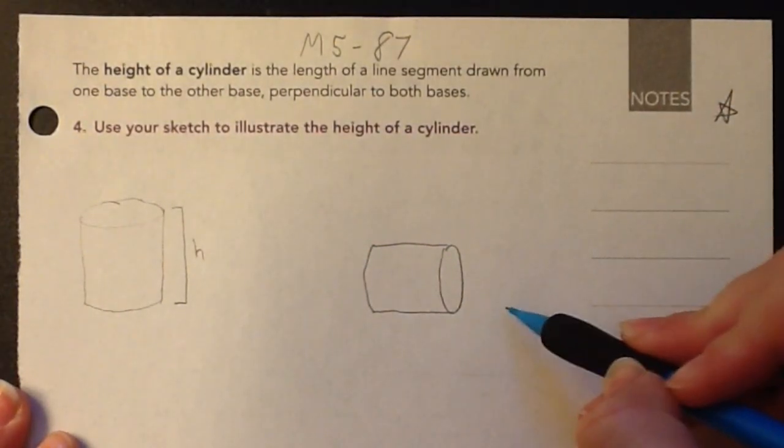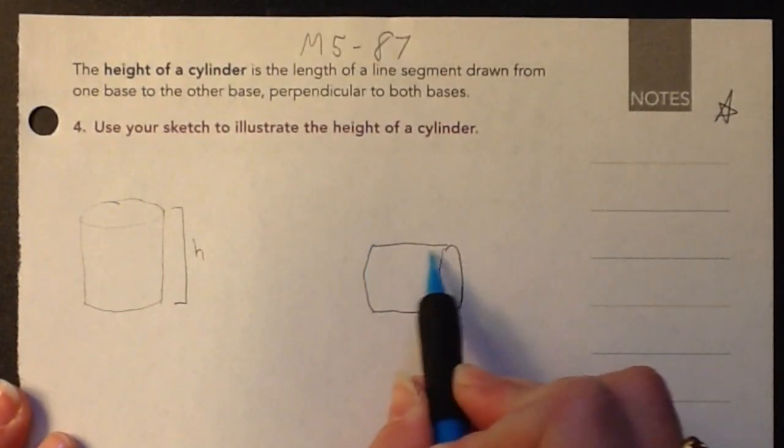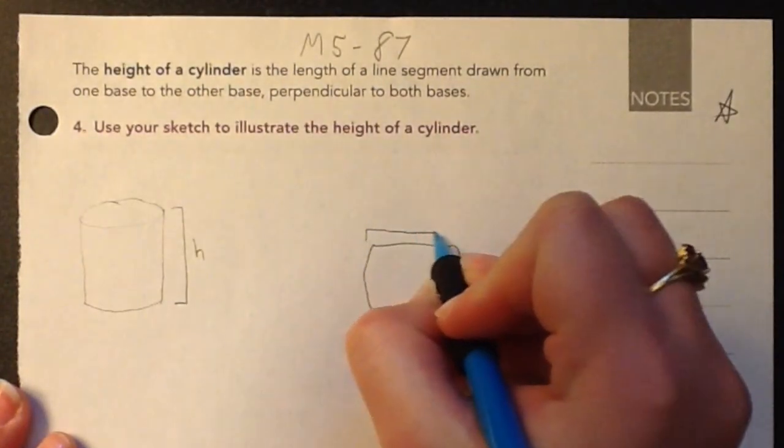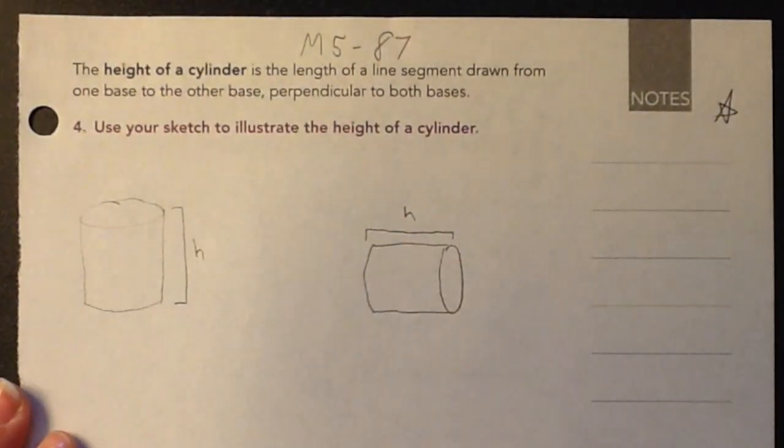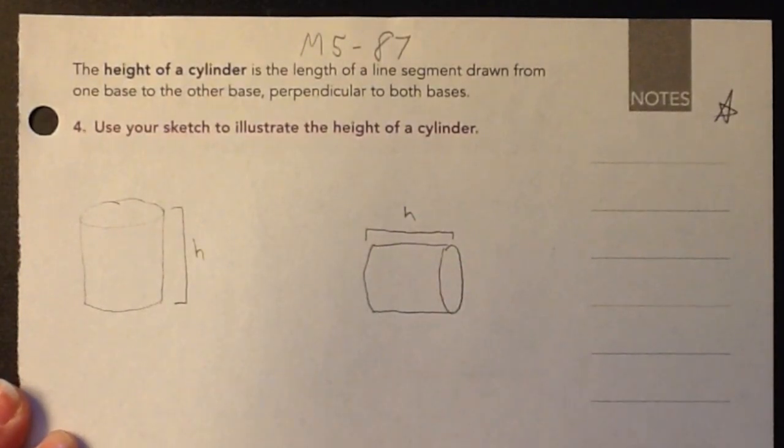Now the height is not how tall it's standing. It's still basically that length connecting the circle base and the circle top. So actually the height in this case would be that. So it's always that same length from the base to the top, even if it's on its side.